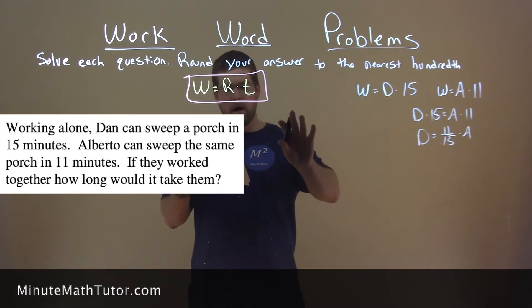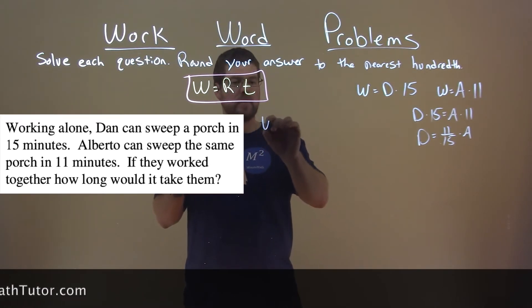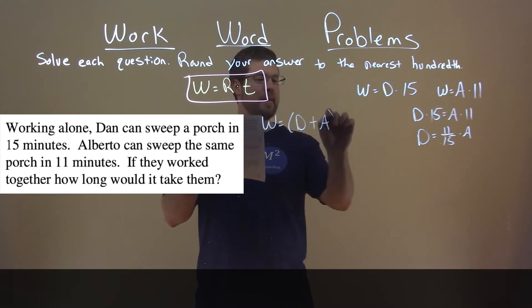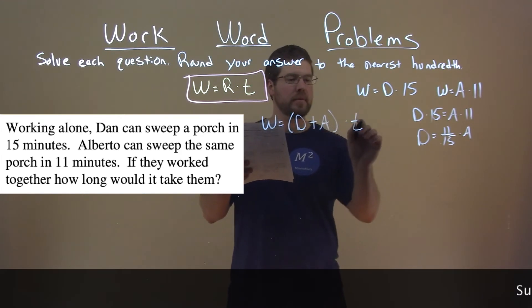So, we need to know how long it would take if they work together. So, the same job, that W, is equal to adding both of their work rates here times time.